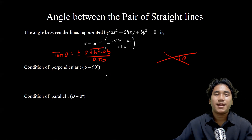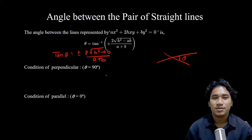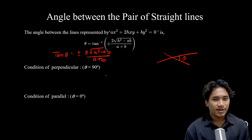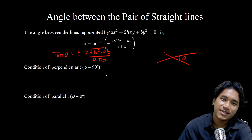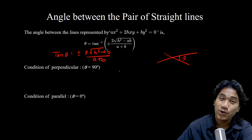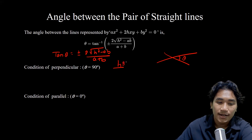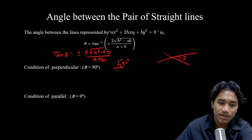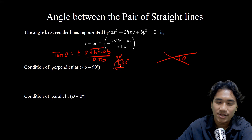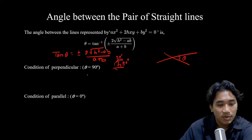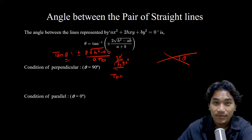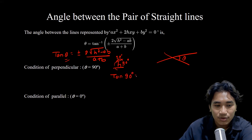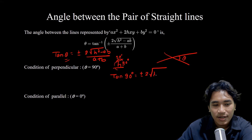Now, comparing the special case: if the lines are perpendicular to each other, the angle between them is 90 degrees. So we put theta equal to 90 degrees into the formula: tan 90 degrees equals plus or minus 2 times the square root of h squared minus ab, divided by a plus b. Tan 90 is undefined — that is, infinite, meaning something divided by 0.